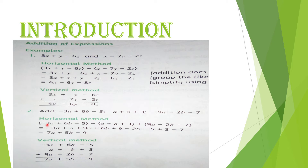Brackets open karne ke baad like terms katthe karen: minus 3a, plus a, aur plus 9a. Phir b wali: plus 6b, plus b, aur minus 2b. Phir constant terms: minus 5, plus 3, aur minus 7.